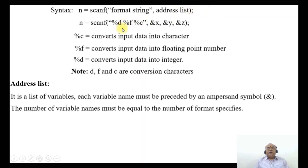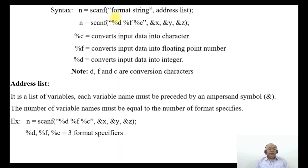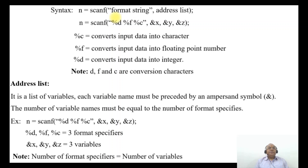For example, if n = scanf("%d %f %c", &x, &y, &z), the format specifiers %d, %f, and %c are three specifiers, and &x, &y, &z are the three variables. If you have two variables, you cannot have three format specifiers — the number of format specifiers must equal the number of variables.